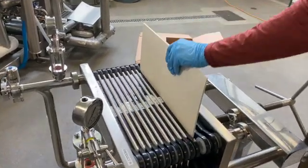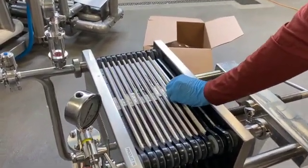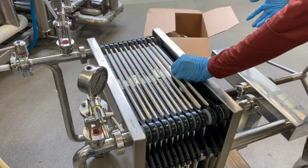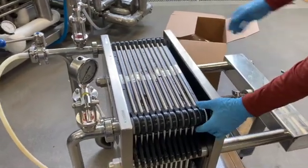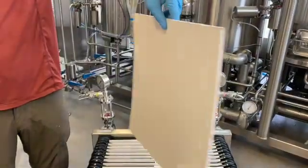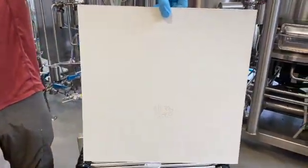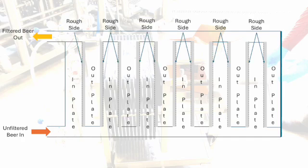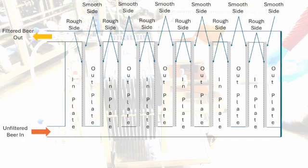Filter sheets perform the actual beer filtration. It is also important to properly place filter sheets between the plates. Same as with filter plates, the orientation of the filter sheets changes with each consecutive sheet. Each filter sheet has a rough side and a smooth side. Beer should always flow in through the rough side and flow out through the smooth side of the filter sheet. Therefore, the rough side of the filter sheet should always be oriented towards the inflow plate and the smooth side should always be oriented towards the outflow plate.